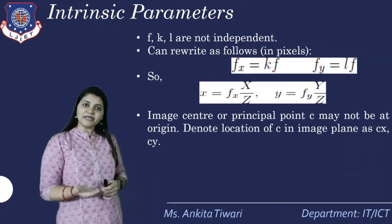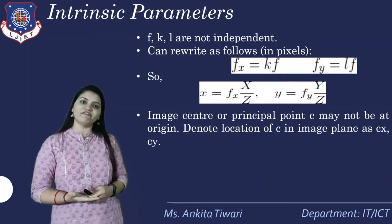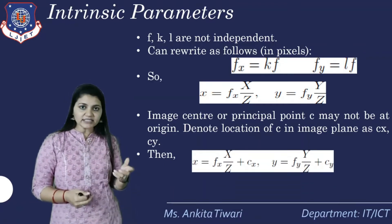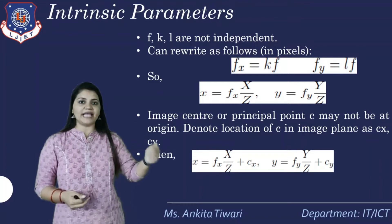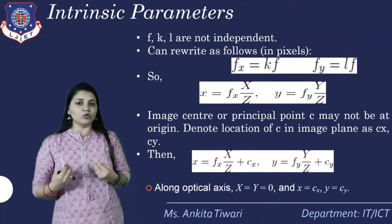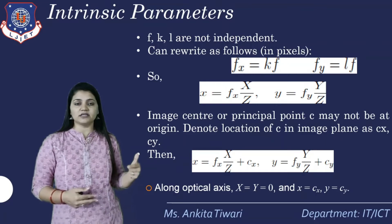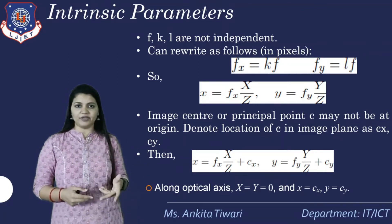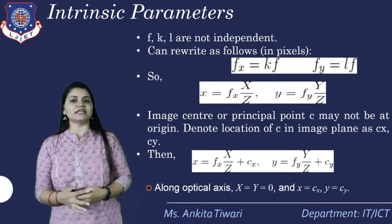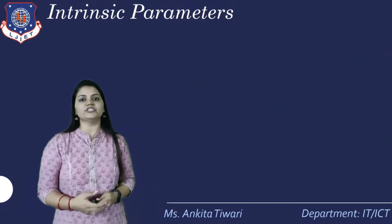With fx and fy defined, x = fx·X/Z and y = fy·Y/Z. The image center or principal point C may not be at the origin. Denoting its position in the image plane as cx and cy, we get: x = fx·X/Z + cx and y = fy·Y/Z + cy. Along the optical axis where X=Y=0, x equals cx and y equals cy.